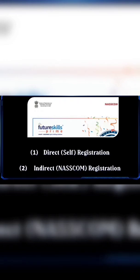If your university has already shared a Google form for registration and you filled in the details with your email ID, then NASSCOM officials might have already created an account with your email ID on the portal. In this case, you might have already received an email and a default password from Future Skills Prime. You can sign in using that email ID and the default password.